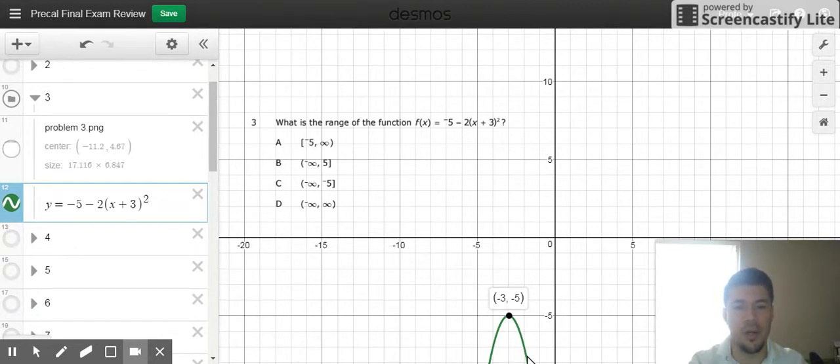So remember, range is bottom to top, so I go from negative infinity to negative 5. If I look at my options, I have only one option that tells me from negative infinity to negative 5, and that is option C.